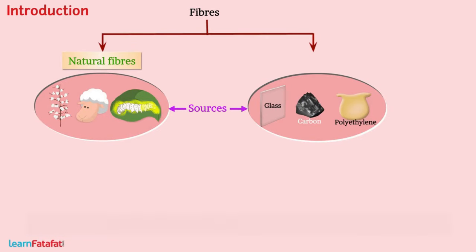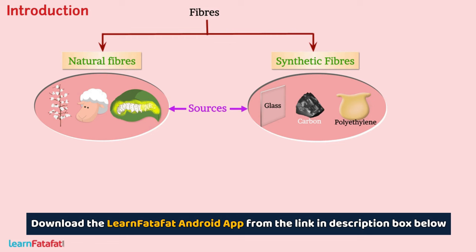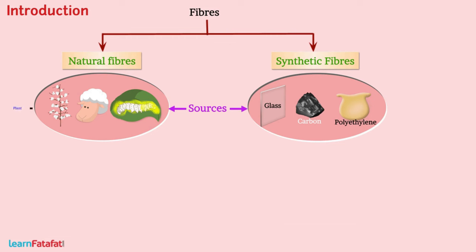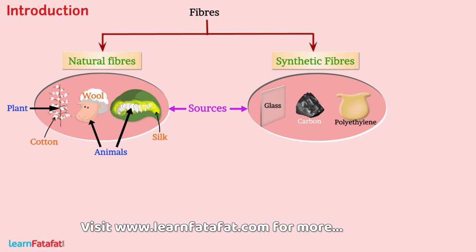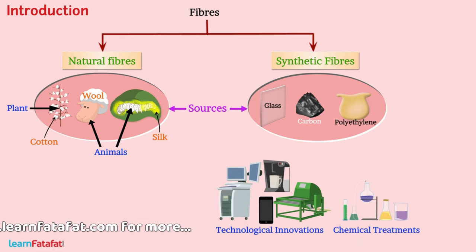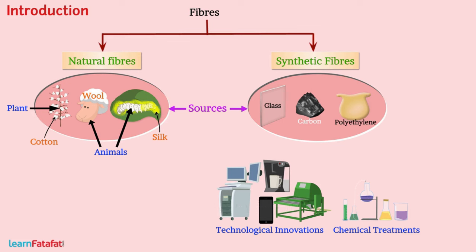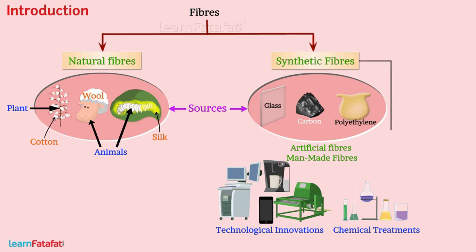Natural fibers are obtained from plants or animals. For example, cotton, wool, and silk. Technological innovations and chemical treatments made it possible to construct fibers artificially. Such fibers are called artificial fibers, or synthetic fibers, or man-made fibers. For example, rayon, nylon, polyester, and acrylic.